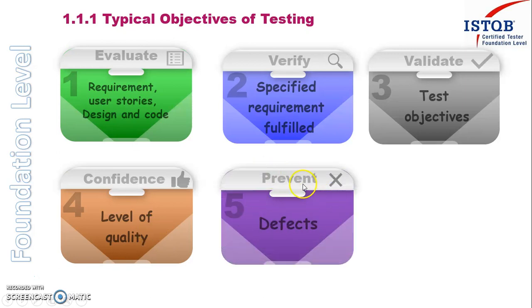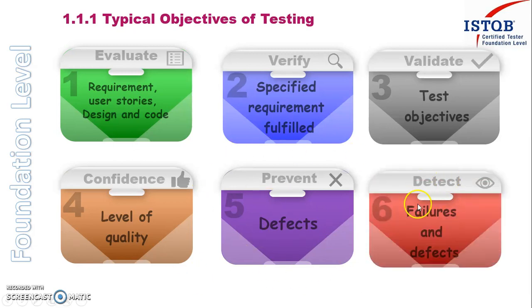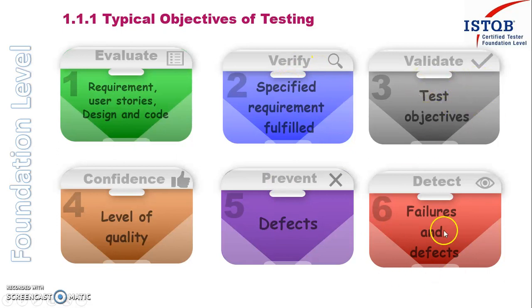The fifth objective is to prevent defects. If you are in the evaluation stage and you have not asked about the timing, the developer may assume the time, develop accordingly, and the customer may not be happy with that. So we have to find those types of issues at each stage. If we find a defect at that particular stage, it will not be passed to the next level — that is how we prevent defects. The sixth and most important objective is finding and detecting failures and defects. In the verification stage we find defects, and in the validation stage we find failures.